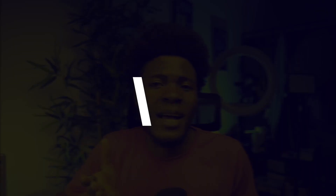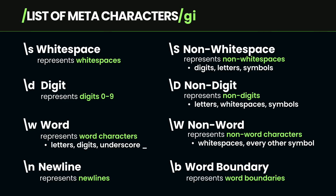In the previous lesson of this Simplify Regular Expression course, we looked at metacharacters, which are made up of the backward slash and a character — a combination that has a special meaning. We looked at the whitespace metacharacter for matching whitespaces, the non-whitespace metacharacter, the digit metacharacter, the word metacharacter, and so on.